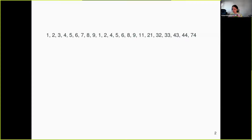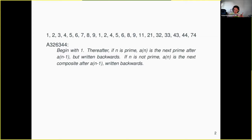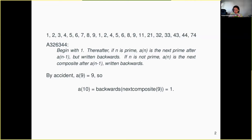There really isn't an obvious pattern or rule, but there is a simple one. You start off with the value 1, and then if you want to compute the nth term, you ask whether n is prime or composite. If n is prime, you take the first prime after the previous term and write it backwards. If n is composite, you take the first composite after the previous term and write it backwards. For example, a(9) happens to be 9, so if you want to compute the 10th term: 10 is composite, so the first composite after 9 is 10, and written backwards that's 1. So a(10) is 1.